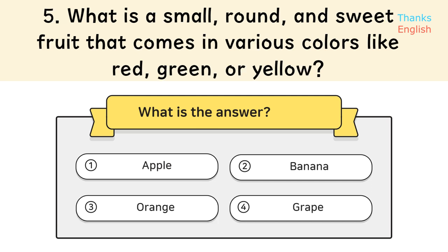Question 5: What is a small, round, and sweet fruit that comes in various colors like red, green, or yellow? Answer 5.